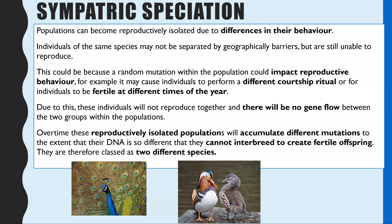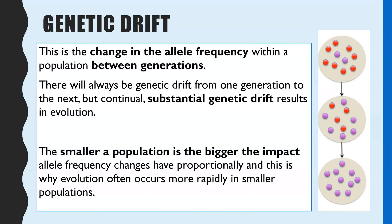The impact of sympatric speciation is the same as for allopatric speciation. Because they are either fertile at different times of the year or don't recognize a courtship ritual, individuals in those two groups will not reproduce together, so there'll be no gene flow. They'll be accumulating different mutations over many generations, and once their DNA is so different that they cannot interbreed to make fertile offspring, you've created two different species.